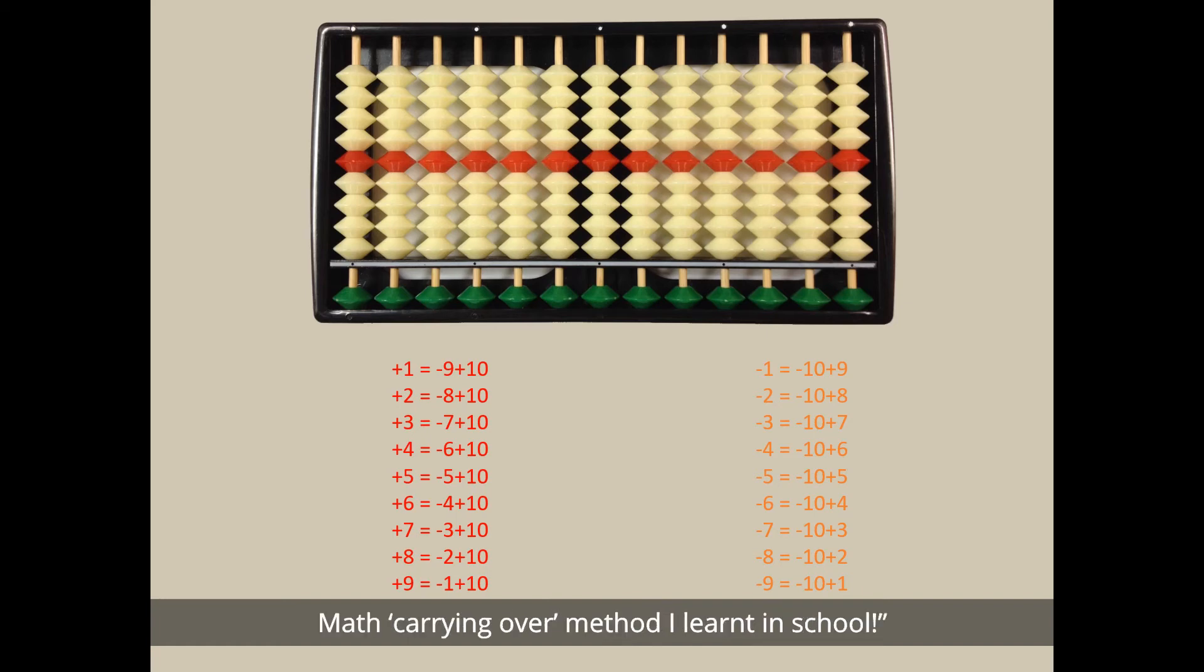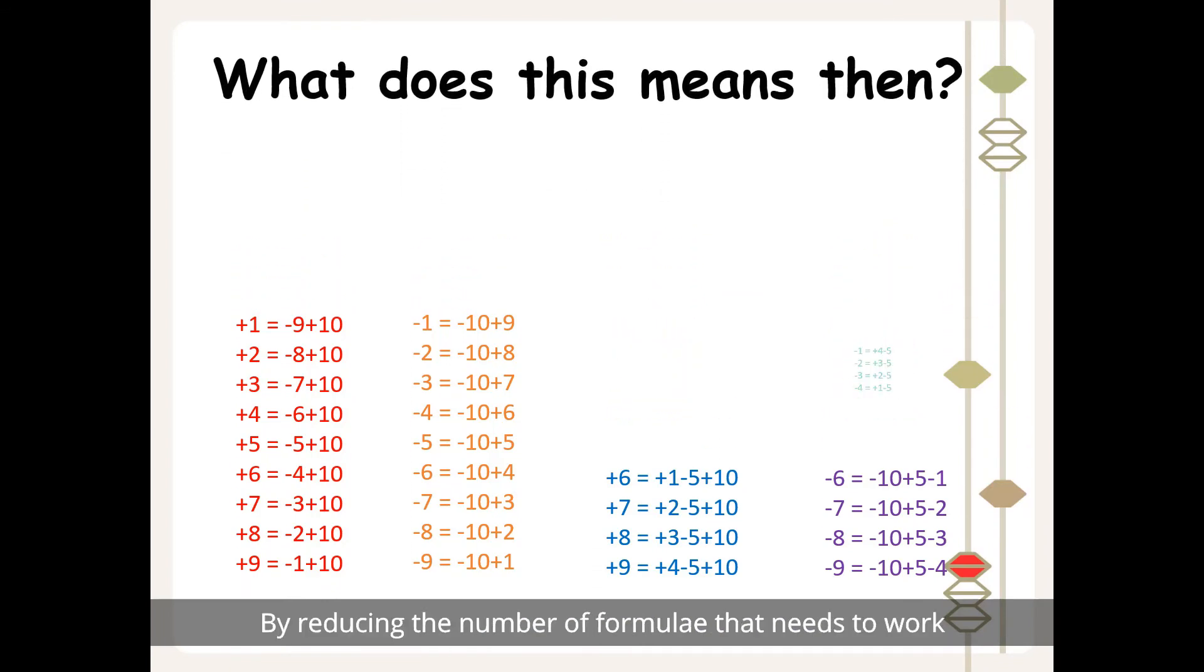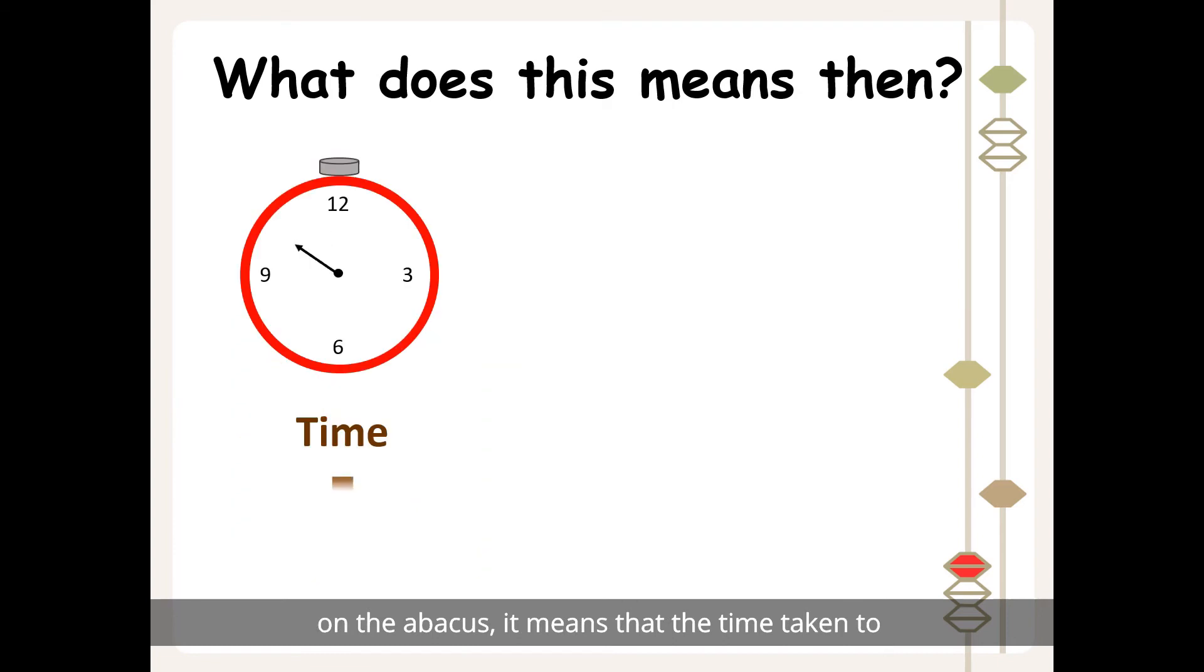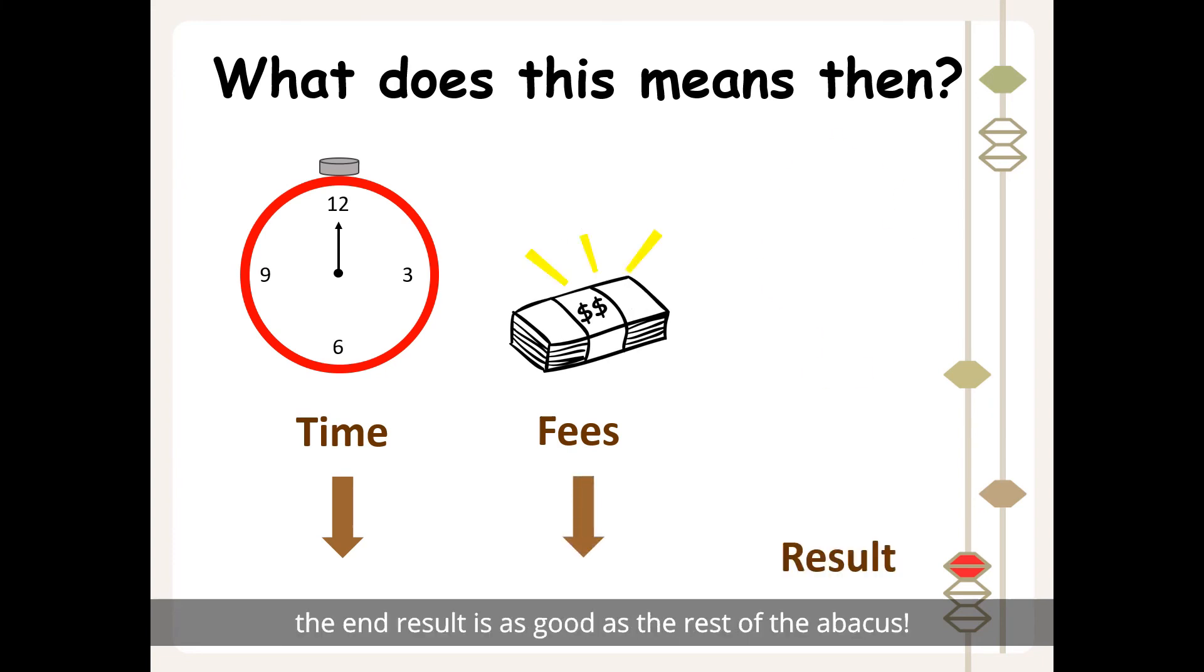What does this mean then? By reducing the number of formulae that needs to work on the abacus, it means that the time taken to learn the basics of abacus calculation is greatly reduced. Lesser time means lesser money invested in learning. What's more, the end result is as good as the rest of the abacus.